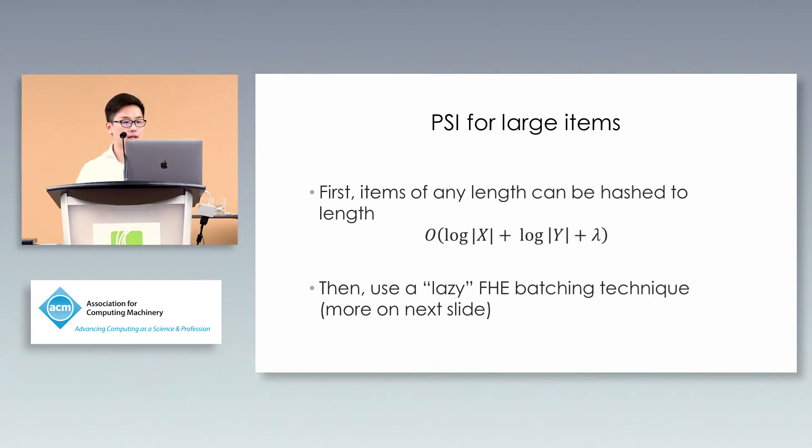For the last part, let me talk about our enhancement to the previous PSI protocol. We used to only handle 32-bit items. If we have really long items, we can do preprocessing where we hash items to this given length. This log X plus log Y plus lambda ensures small probability of collision. For realistic sizes, it's about 80 to 100 bits. For those items, we use a batching technique also used in the previous paper to encode elements as FHE plaintext and ciphertext.